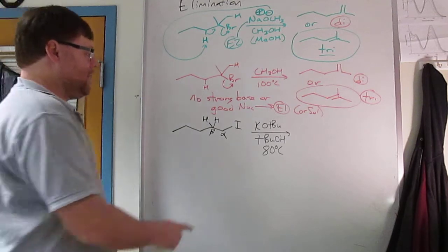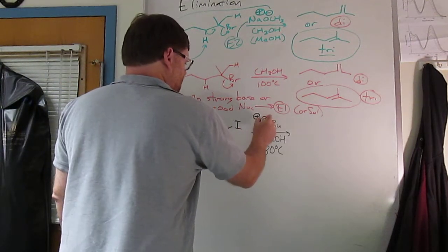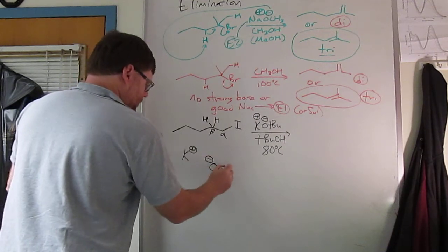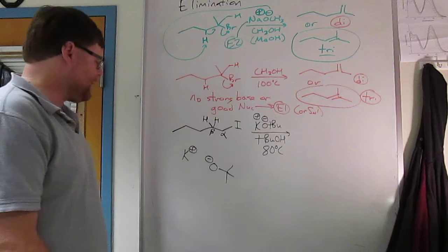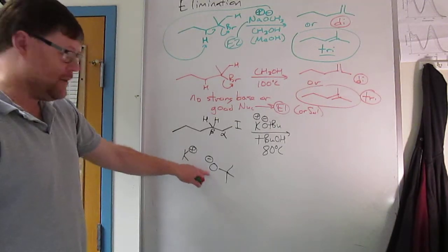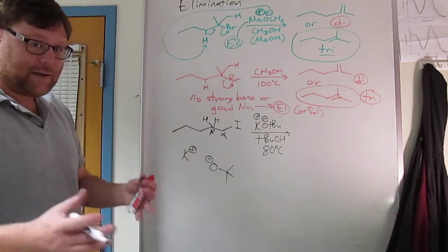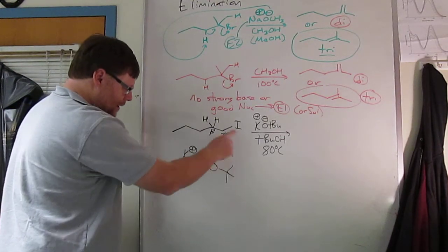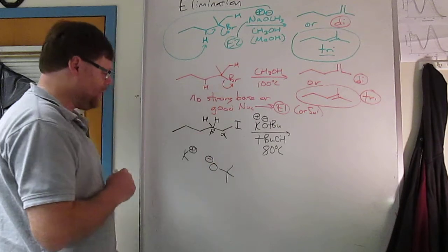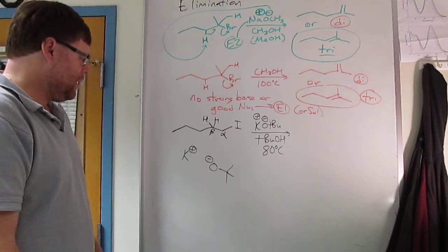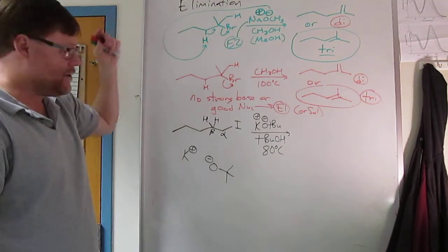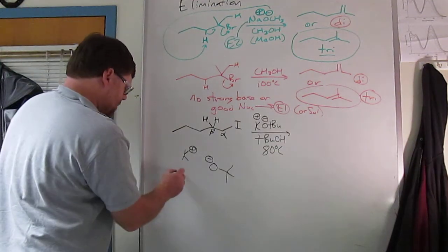So in this case, potassium t-butoxide, we have potassium plus and t-butoxide. T-butoxide is a strong base. It's like hydroxide or methoxide or ethoxide. If you see these O minuses where the charge is not delocalized, you can't draw any resonance structures here, that's going to be a strong base. So you do have a strong base. I've said it's an elimination reaction, therefore it's going to be E2.